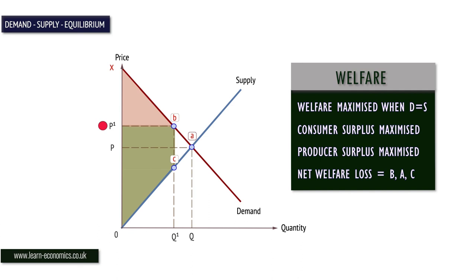At a lower price, at P2, supply contracts, so the output is at Q1. Producer surplus shrinks, but consumer surplus increases. However, the net effect is for welfare to fall, represented by area B, A, C.